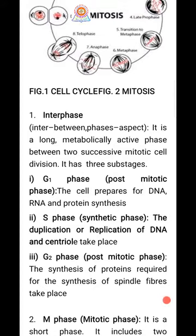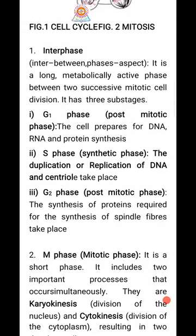The next phase is the S phase, also known as the synthetic phase. The duplication or replication of DNA and centrioles takes place in this S phase. The third phase is G2 phase, which is the post-mitotic phase. To clarify: G1 is the pre-mitotic phase, S phase is the synthetic phase, and G2 is the post-mitotic phase.